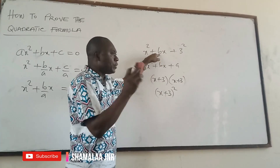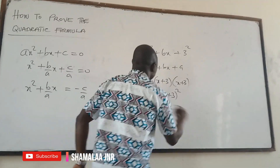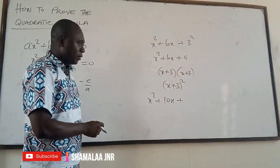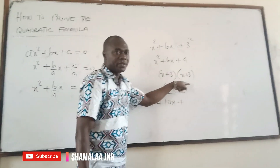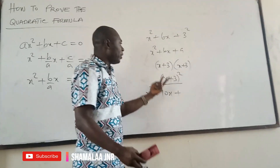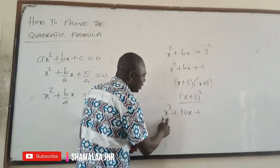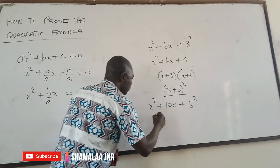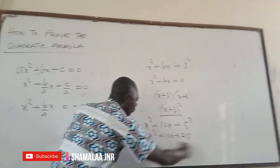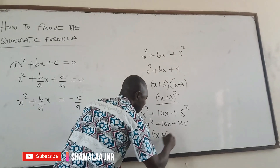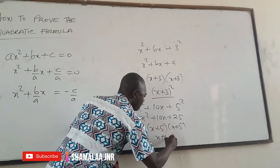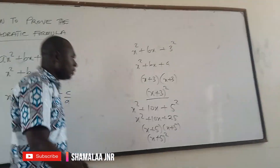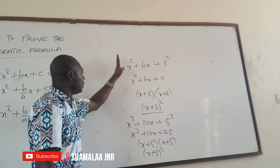Similarly, if you have x² + 10x and you want to complete the square, you take half the coefficient of x, which is 5, and square it to get 25. So x² + 10x + 25 factorizes as (x + 5)². To complete the square for x² + 10x, we add 5². We are going to transfer this same idea to the general case.